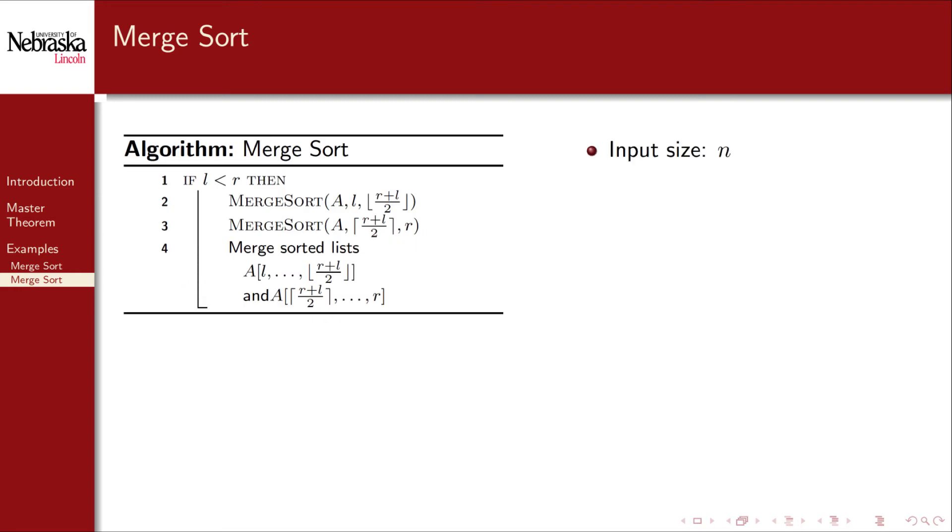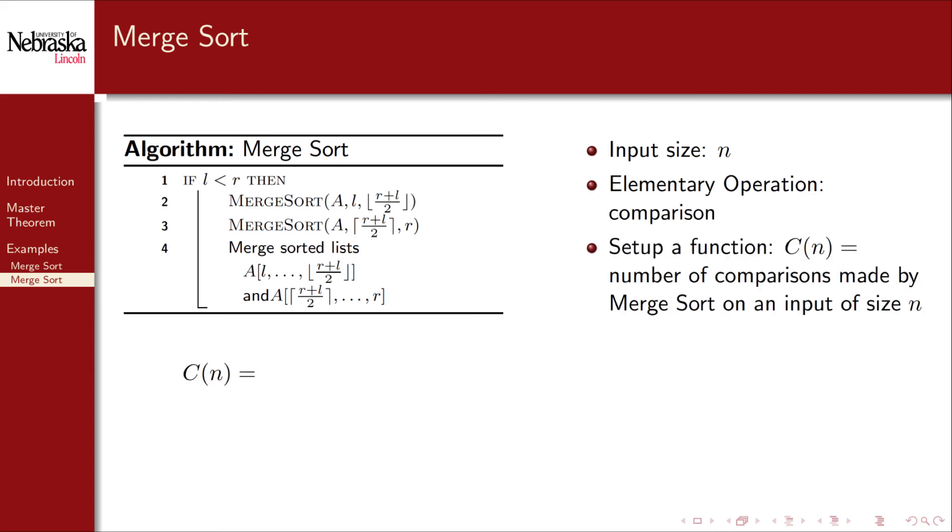As before, the input size is n and the elementary operation is comparisons performed in the merge subroutine. We set up a resource function c sub n to represent the number of comparisons made by merge sort on an input size of n. We won't go into the details, but the non-recursive merge subroutine performs about n minus 1 comparisons in the worst case.